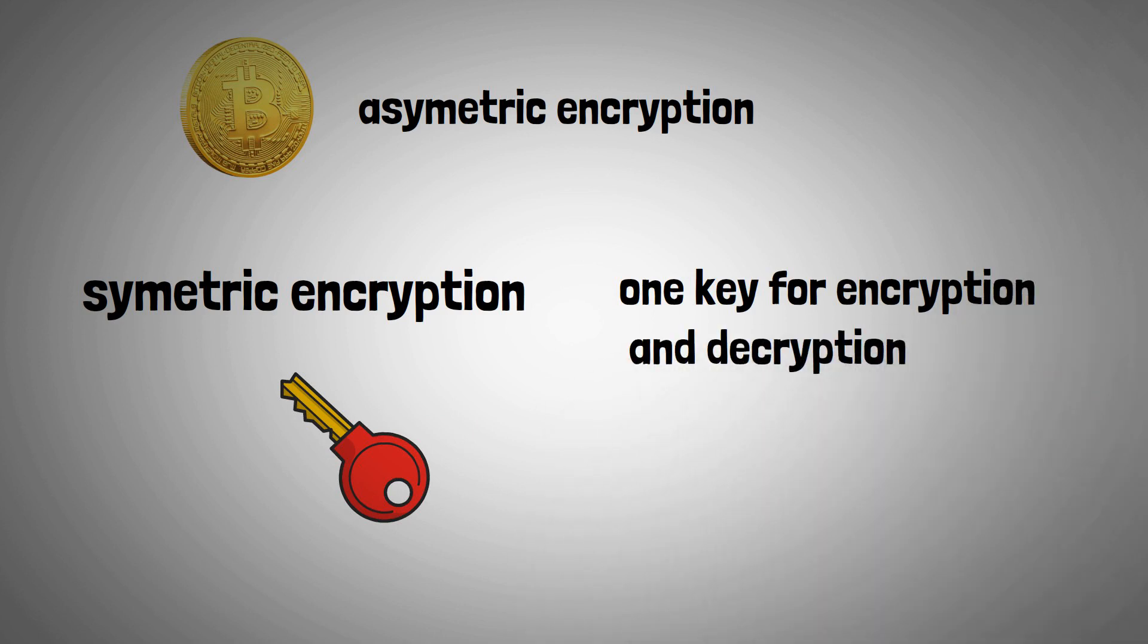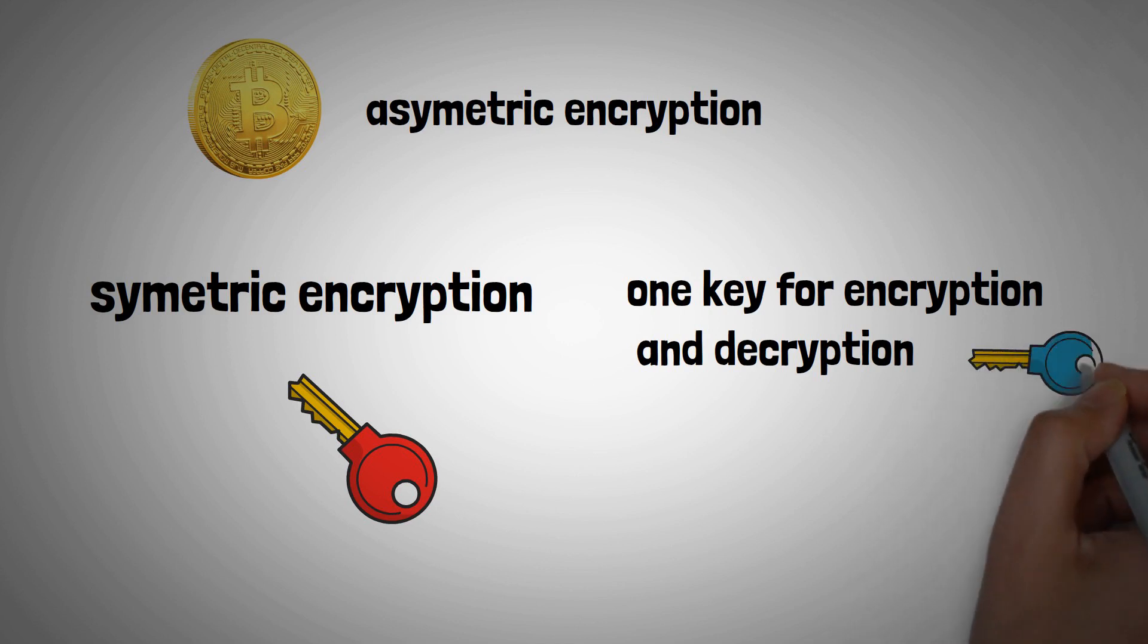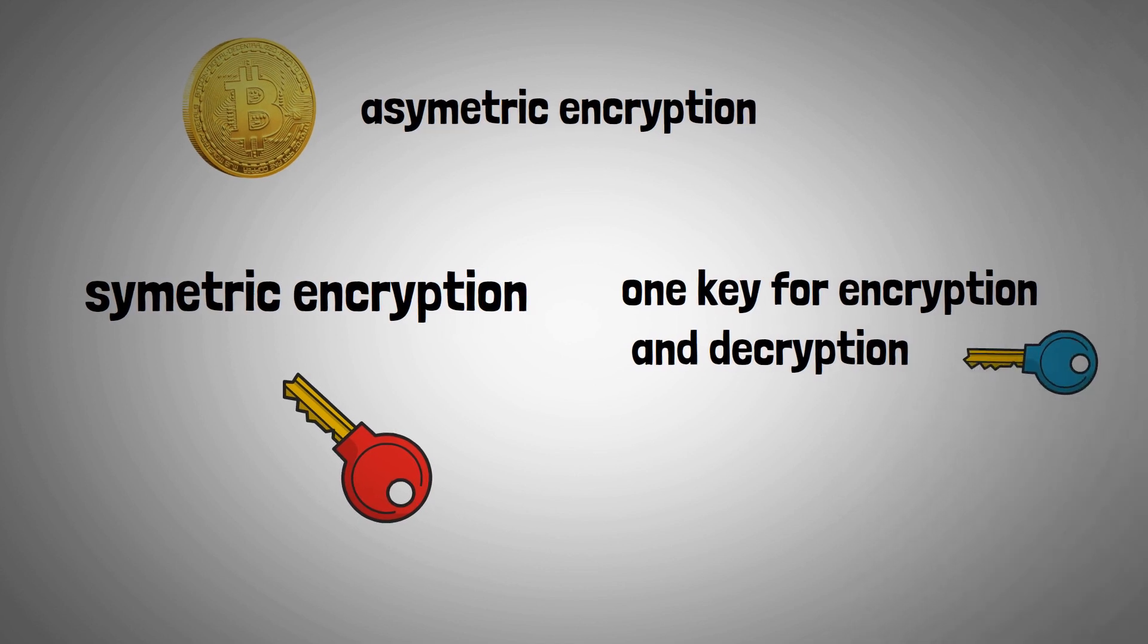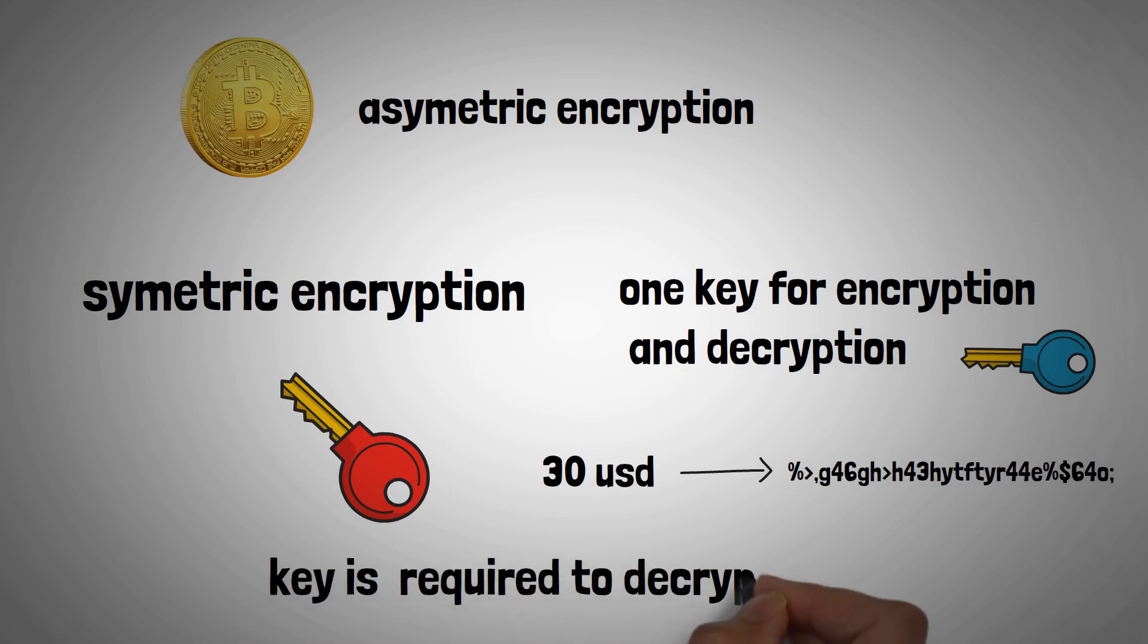Two parties exchanging information via symmetric encryption must exchange the key for the encryption process to take place. In symmetric encryption, data is converted from plain text to ciphertext, which cannot be decrypted by anyone who does not have the key.